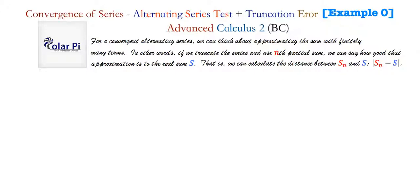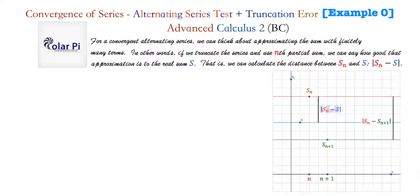The following visual is going to go a long way in helping you understand this. So suppose that S, the value to which the alternating series converges, is this number here. And let's say S_N is the nth partial sum.